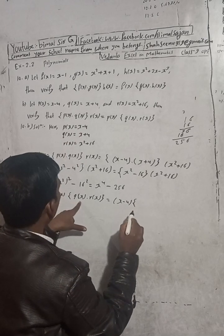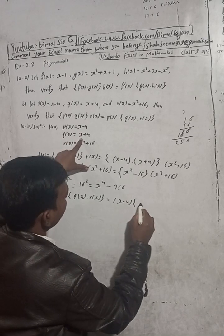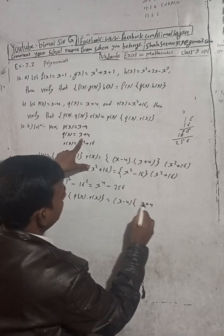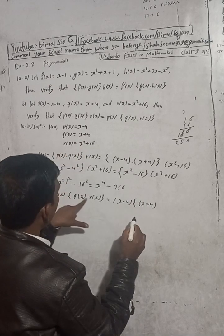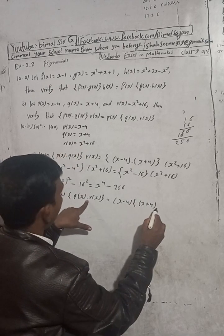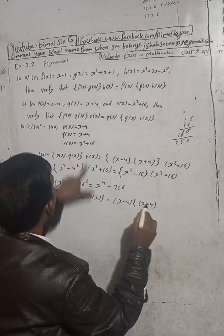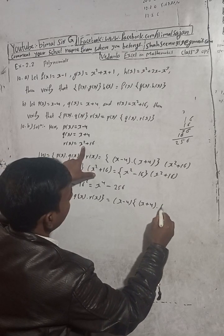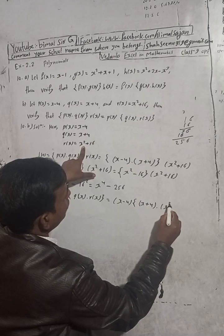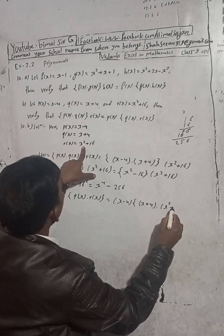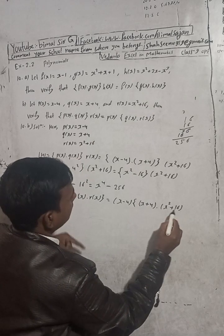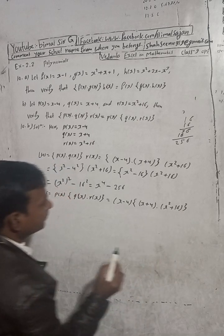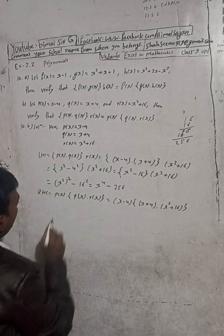And put here this bracket. Into means dot means into. R(x) means so much: x square plus 16. And then this curly bracket. So here, what we can see here...